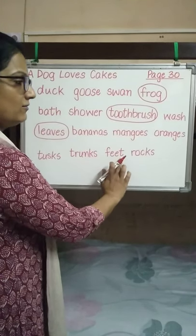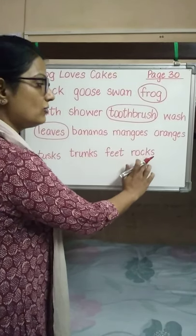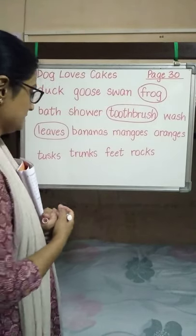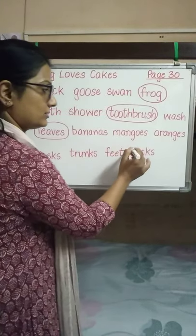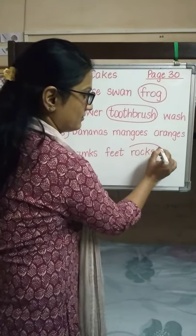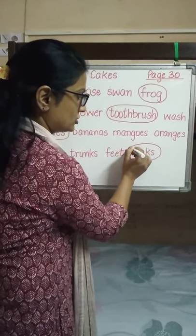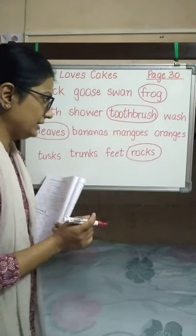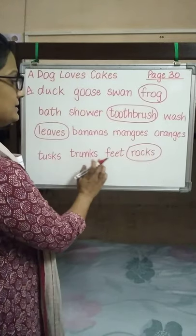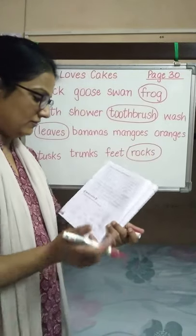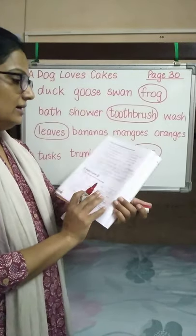Next group: tusks, trunks, feet, rocks. What is the odd one out? Rocks — because it is different from tusks, trunk and feet. All of those are body parts of an elephant.